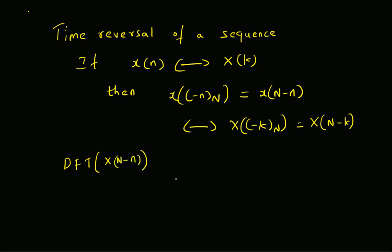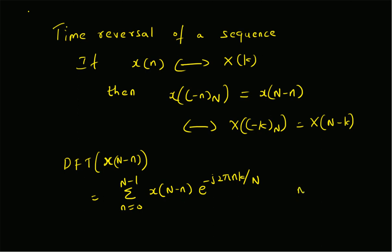We have to find the DFT of x[N-n]. The DFT of x[N-n] is by definition equal to the summation from n=0 to N-1 of x[N-n] times e^(-j2πnk/N). That is the definition of the DFT.